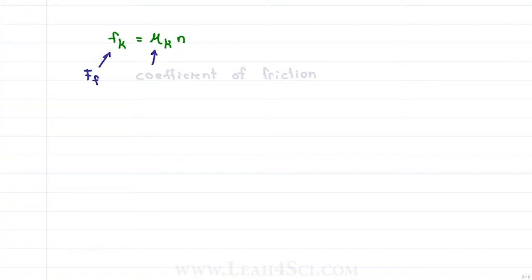This brings us to the equation for friction: the force of friction, static or kinetic, is equal to mu times n. F sub k or f sub s equals mu sub k or mu sub s times n, where n is the normal force.